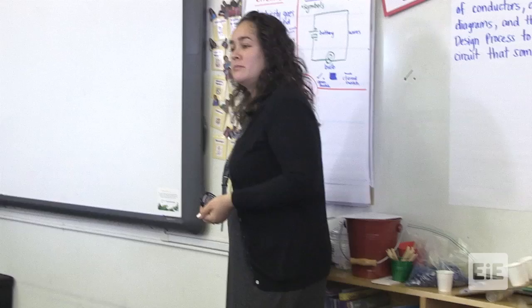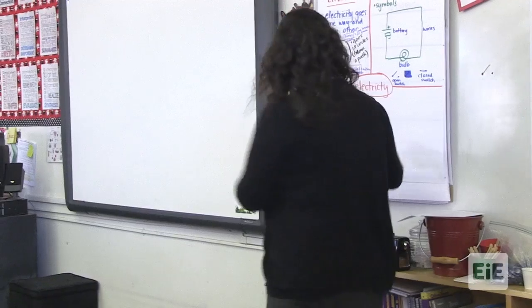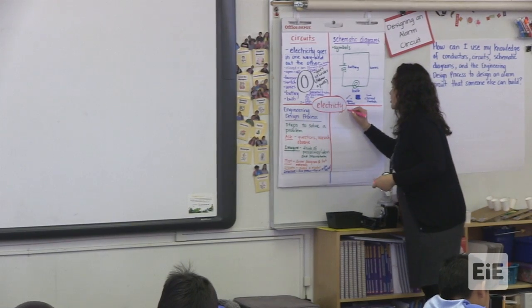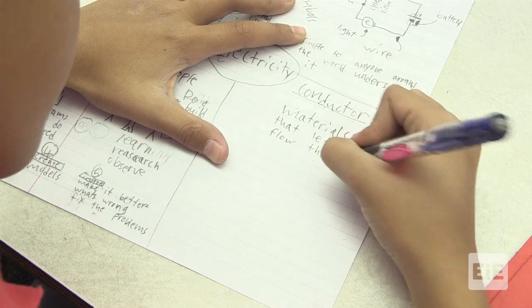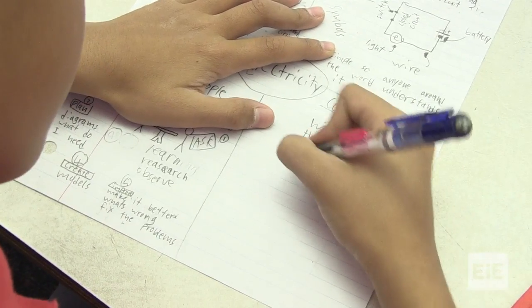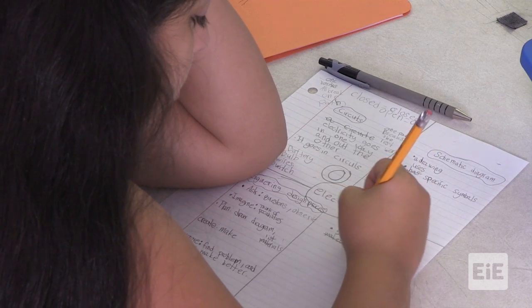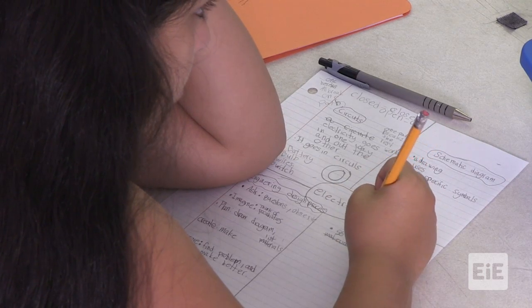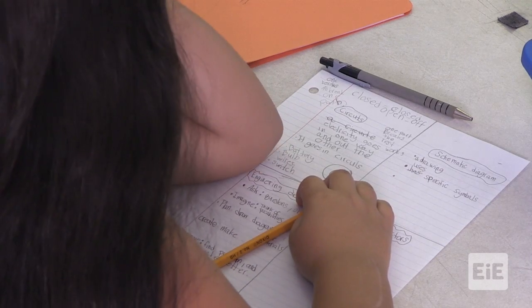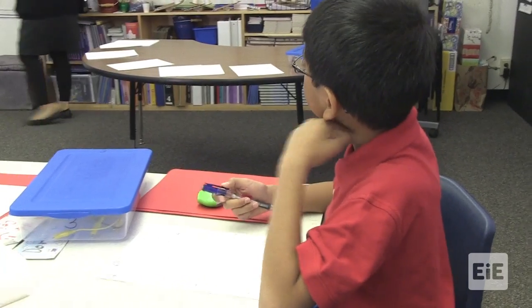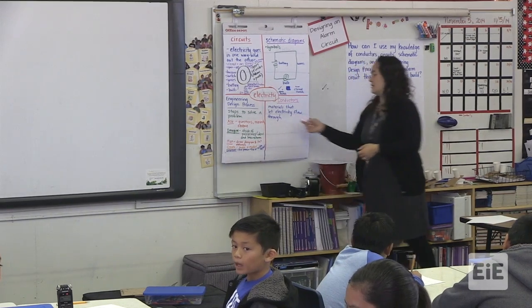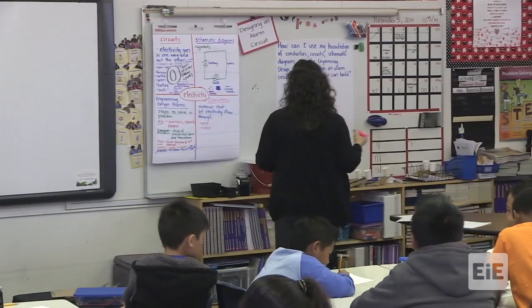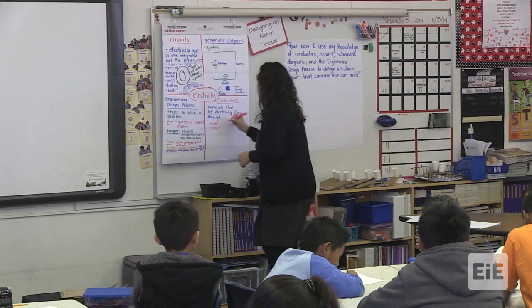And the one that we're going to move on to next is conductors. Ready? Go. Conductors. Okay, stop. Material that lets electricity flow through it. And what's a type of material that will let electricity flow through? Metal. Different types of metal.